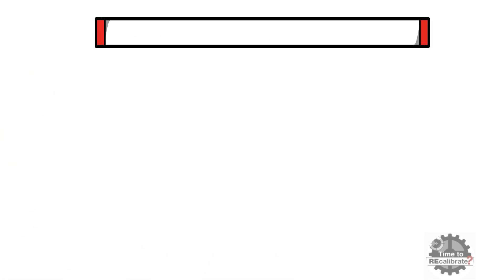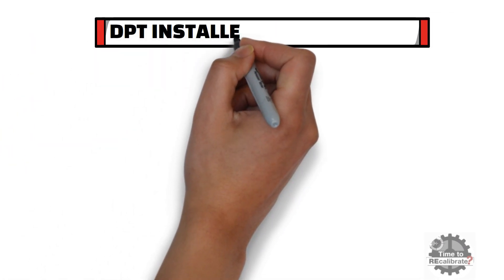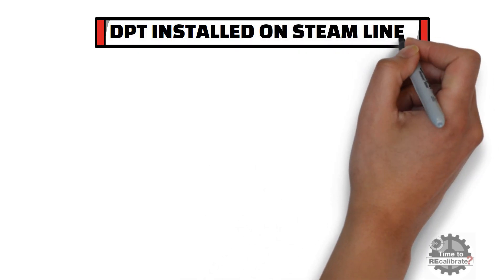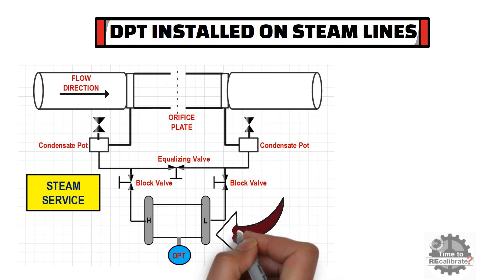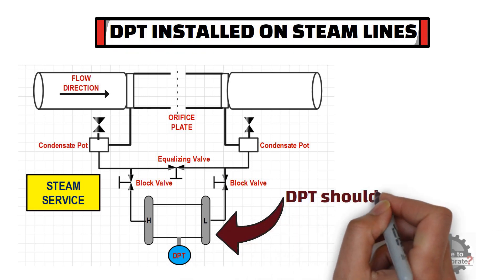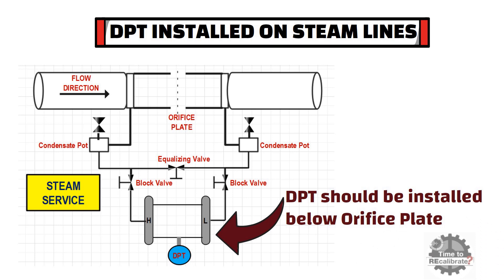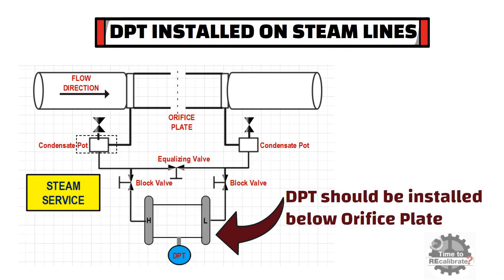Now let's take one more situation when a differential pressure transmitter is installed on steam lines. As you can see, for steam lines, the DP transmitter should be installed below the orifice plate with condensate pots. Both the pots should be installed at the same level.